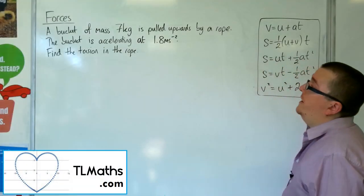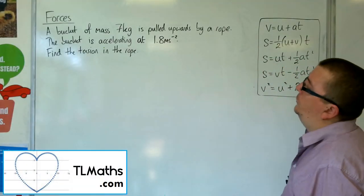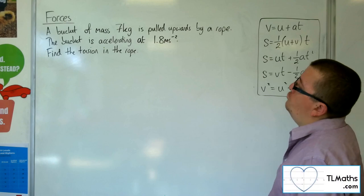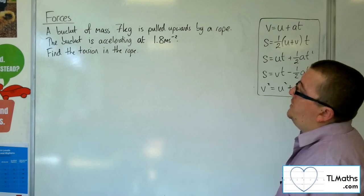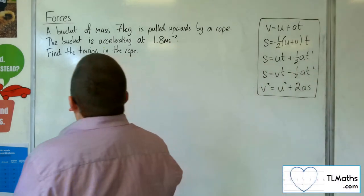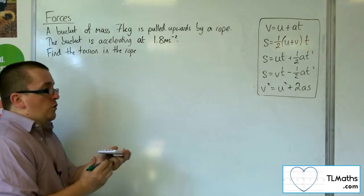In this video, we've got a bucket of mass 7 kilos being pulled upwards by a rope. The bucket is accelerating at 1.8 metres per second squared. Find the tension in the rope.